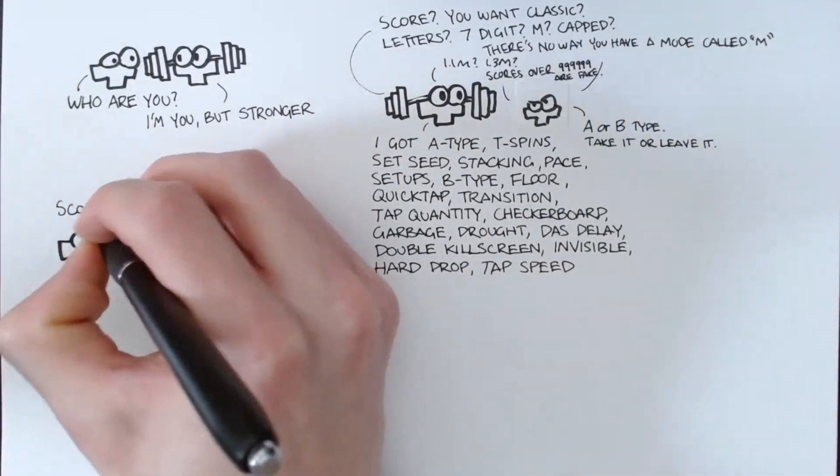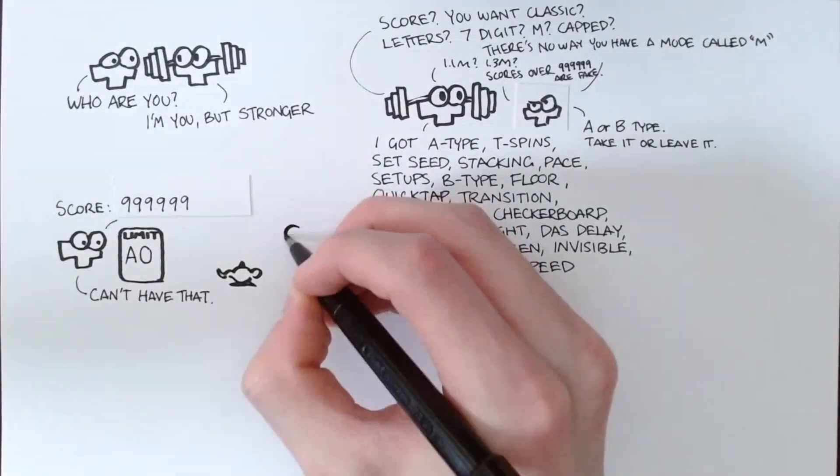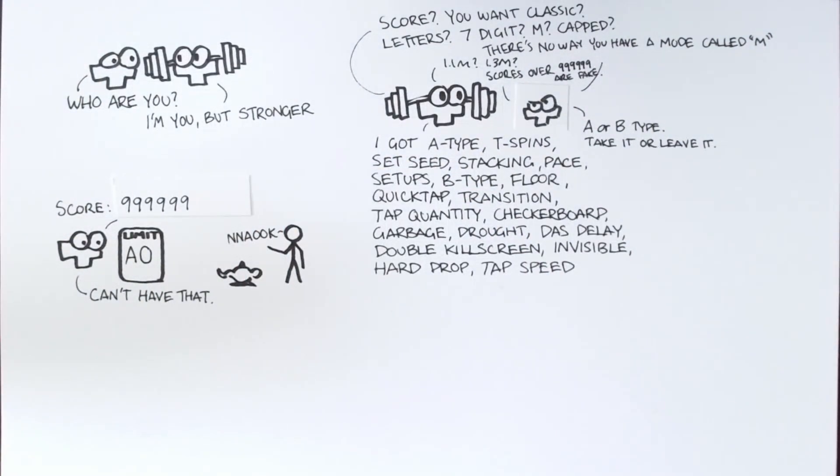In the original game, the score is stored in 3 bytes, and at the end of every calculation, the top byte is compared to A0 to see if it needs to write 99999 into the score.